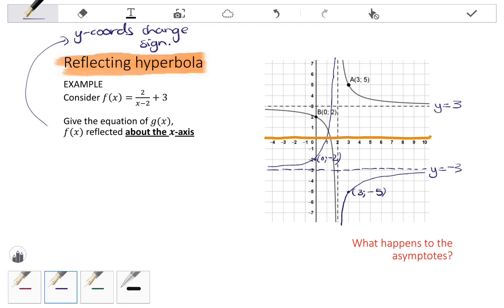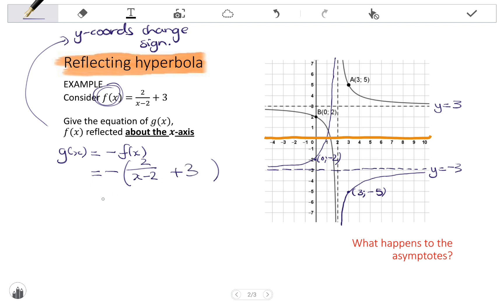Looking at the equation of the reflection, it says give the equation of g of x, which is f of x reflected about the x-axis. Now, if only the y-coordinates change sign, g of x will be equivalent to negative f of x. Remember, f of x represents y, so it goes from positive y to negative y. And all we have to do now is substitute f of x, which is 2 over x minus 2 plus 3, and then distribute that negative into the brackets.